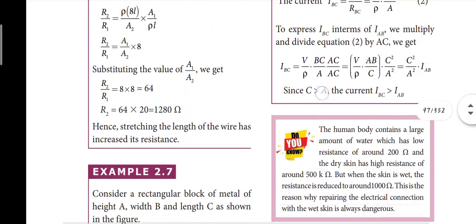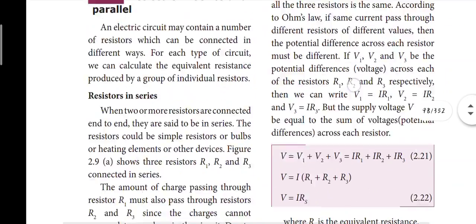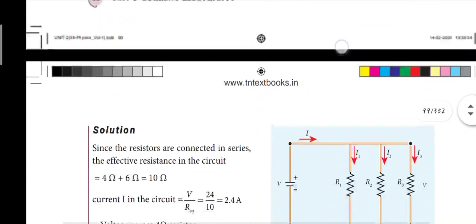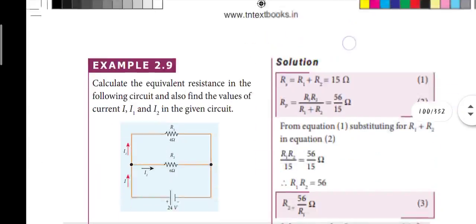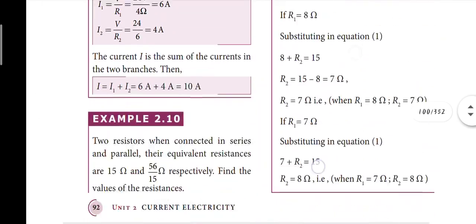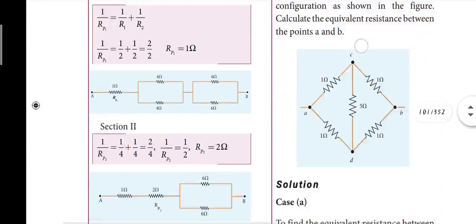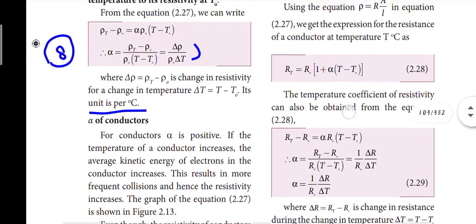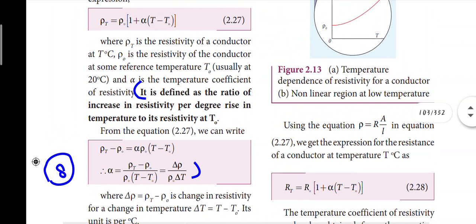Page 94: the temperature coefficient of resistance is defined as the ratio of increase in resistivity per degree rise in temperature to the resistivity at that temperature. The unit is per degree centigrade.